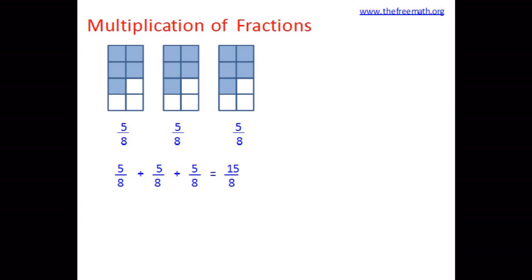But when we do this repeated addition, what is it called? We know that repeated addition is really a multiplication. So instead of adding 5 over 8 three times, can I simply multiply 5 over 8 by 3? Yes, I can do that. For example, rather than saying 2 plus 2 plus 2 equals 6, I can say 2 multiplied by 3 equals 6. So similarly, I can say 5 over 8 multiplied by 3 is 15 over 8. So this is how I am multiplying a fraction by a whole number.